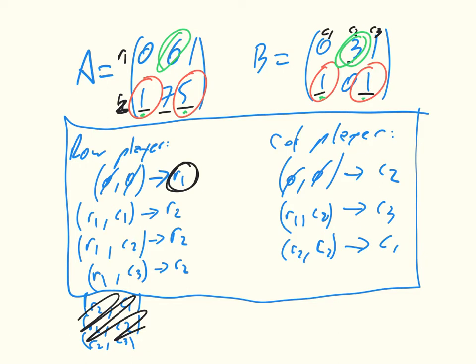So we can realize that essentially the row player has to play R2 in the second term, which is what we have here. But the row player would really appreciate—sorry, but the column player would really appreciate getting this 3 in the first stage.